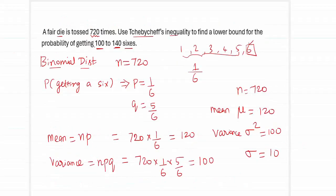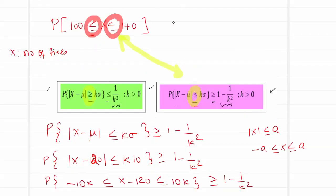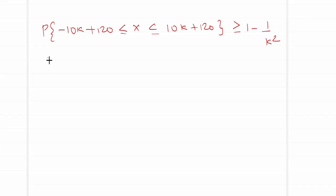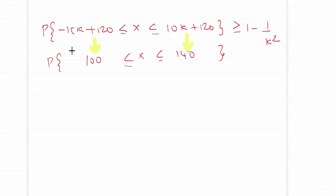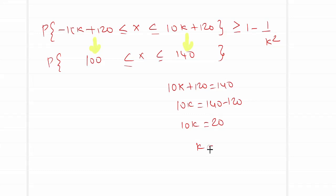Now go back and check our requirement: probability of 100 ≤ X ≤ 140. Comparing with the format, using the right-hand side: 10K + 120 = 140, so 10K = 20, giving K = 2.